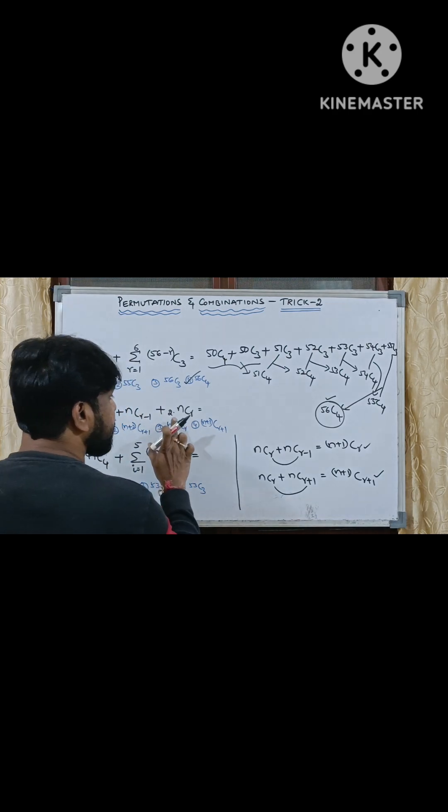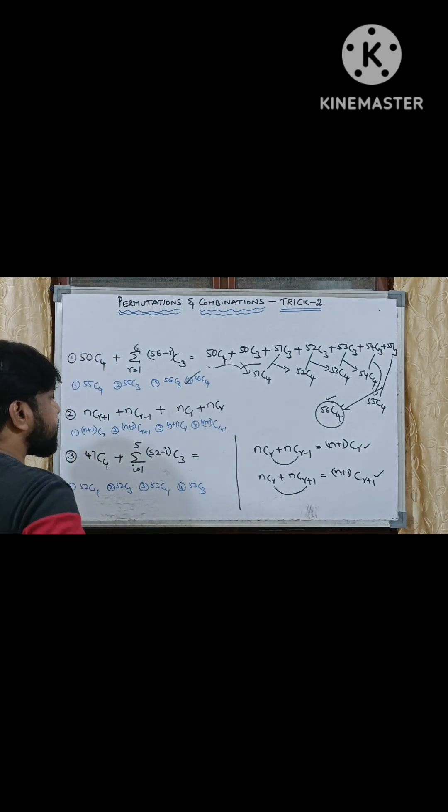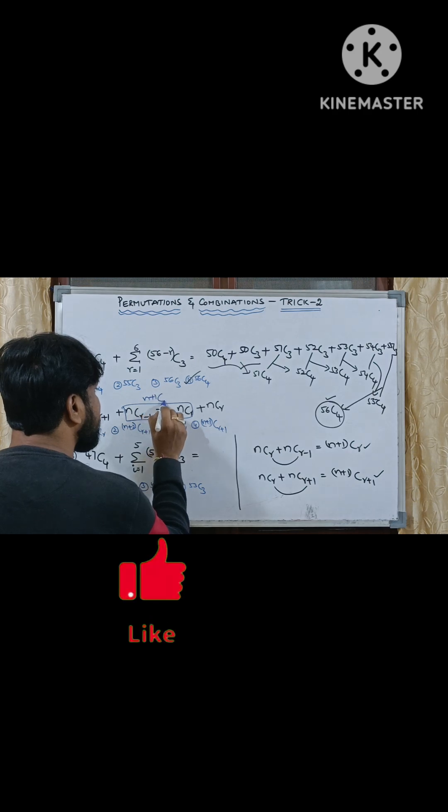This is also the same logic. 2 times of NCR can be written as NCR plus NCR. Then what we can write, NCR plus NCR minus 1 can be written as, from these two combinations we can write N plus 1 CR.